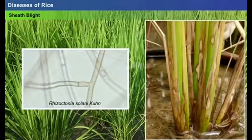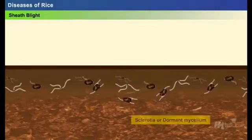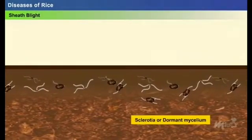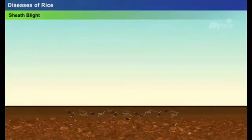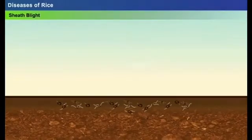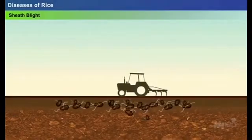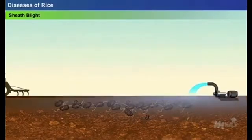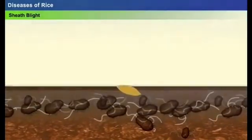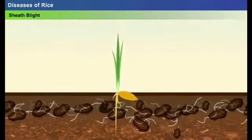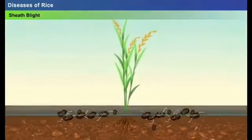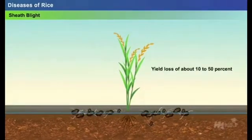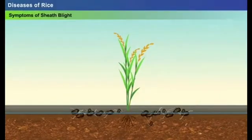Sheath blight is caused by the fungus Rhizoctonia solani. This fungus is capable of surviving in the soil as sclerotia or dormant mycelium during unfavorable conditions for up to two years. The sclerotia in the soil are activated during land preparation or upon frequent irrigation. Under favorable conditions, the hyphae or sclerotia attach to the seedling and begin to germinate. Sheath blight may cause a significant yield loss of about 10 to 50 percent.